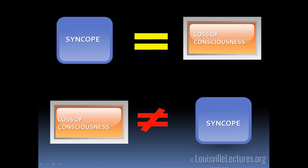She admitted to using IV heroin in January of this year but denies other substances. Her family history is relevant — her brother died at age 44 of an MI. Her physical examination was pretty unremarkable. Orthostatics were obtained and were not positive. She had an EKG performed which was unrevealing. A head CT showed no abnormalities. And lastly, she had a tox screen that was positive for cocaine and opiates.